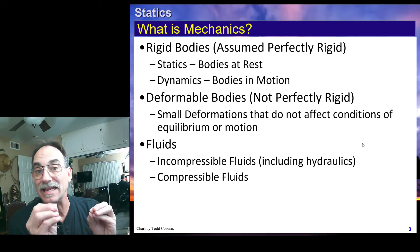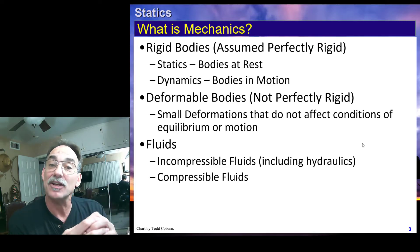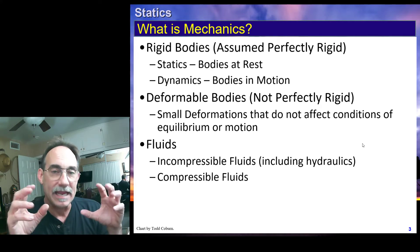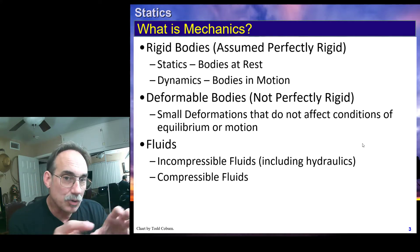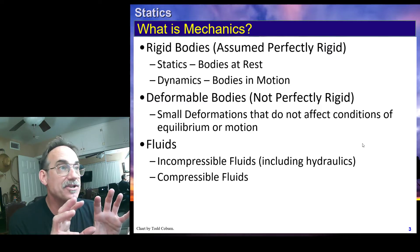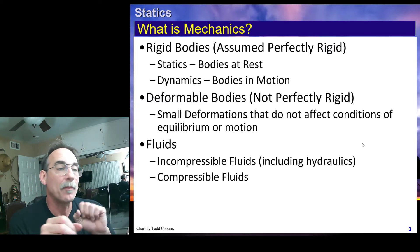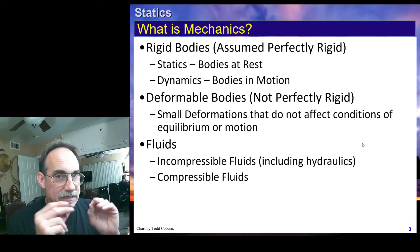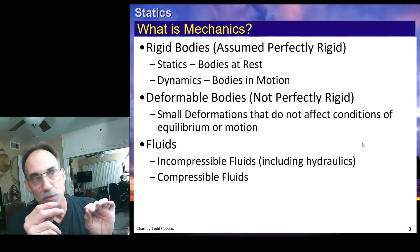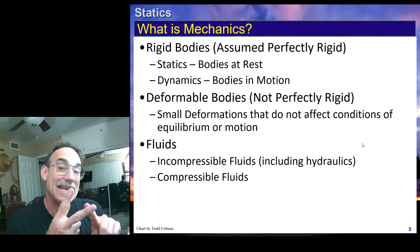So rigid bodies are those we're assuming are really rigid. Even if the structure isn't, we can often make this assumption first, evaluate it that way, and then look at the structure with a closer eye to what's really going on. We're going to break this up into two types of studies of these rigid bodies: statics and dynamics.